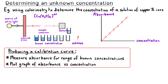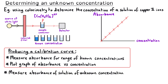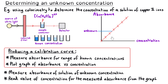Finally, we take the solution with an unknown concentration and put it into the colourimeter. We measure the absorbance of this sample, refer to our calibration graph, find this absorbance on the graph, read across to the best fit line, then read down to the x-axis and read off the concentration corresponding to this measured absorbance.